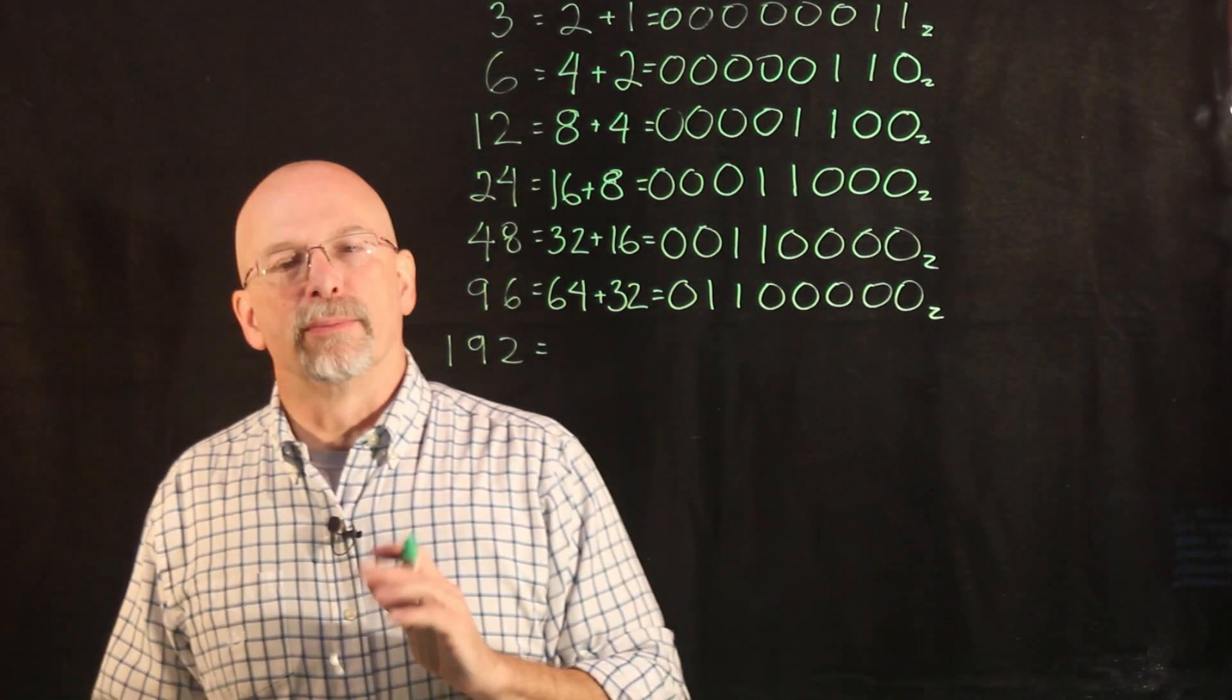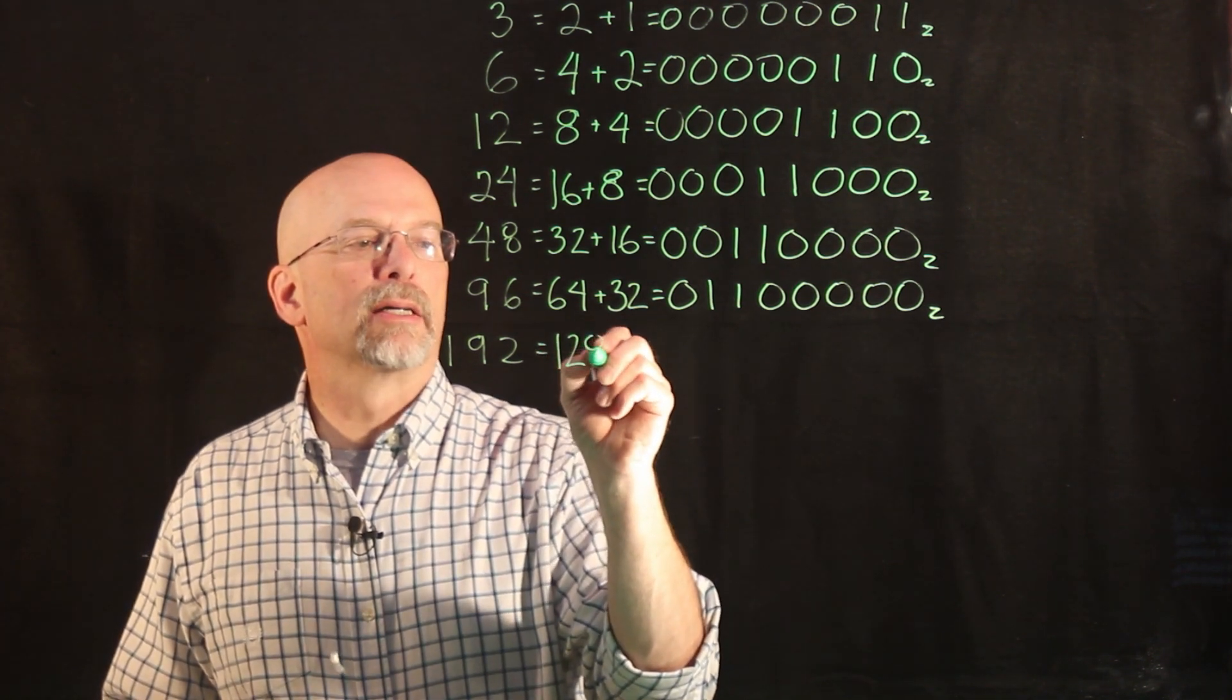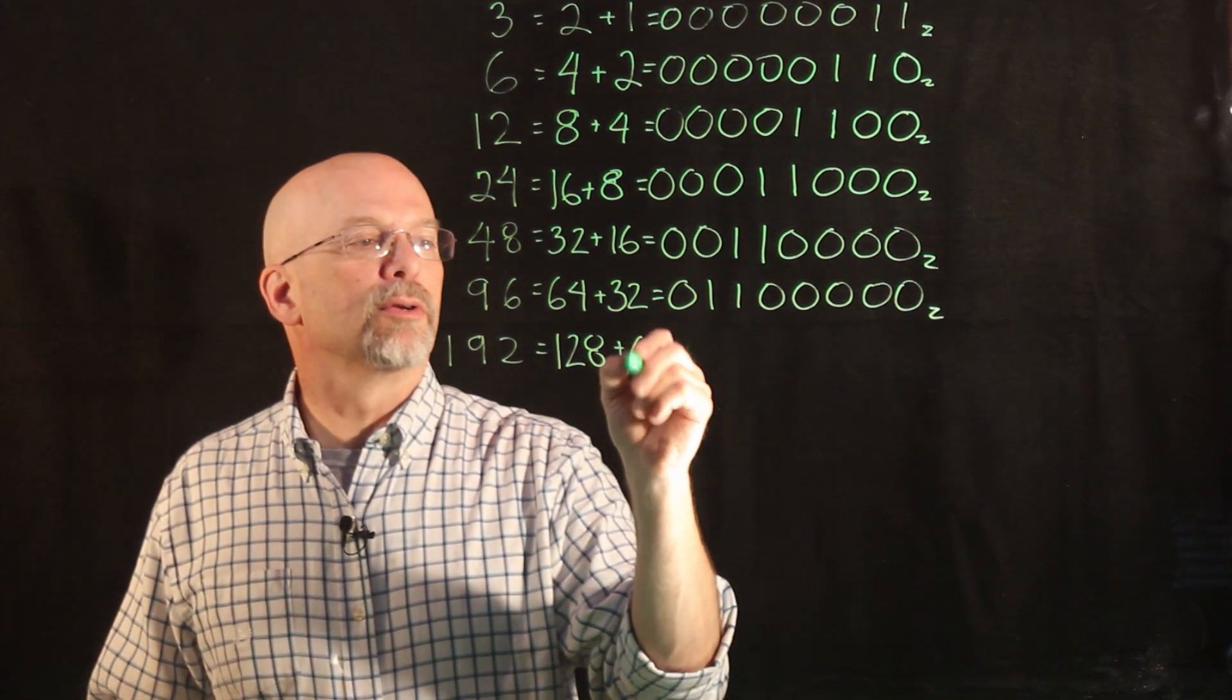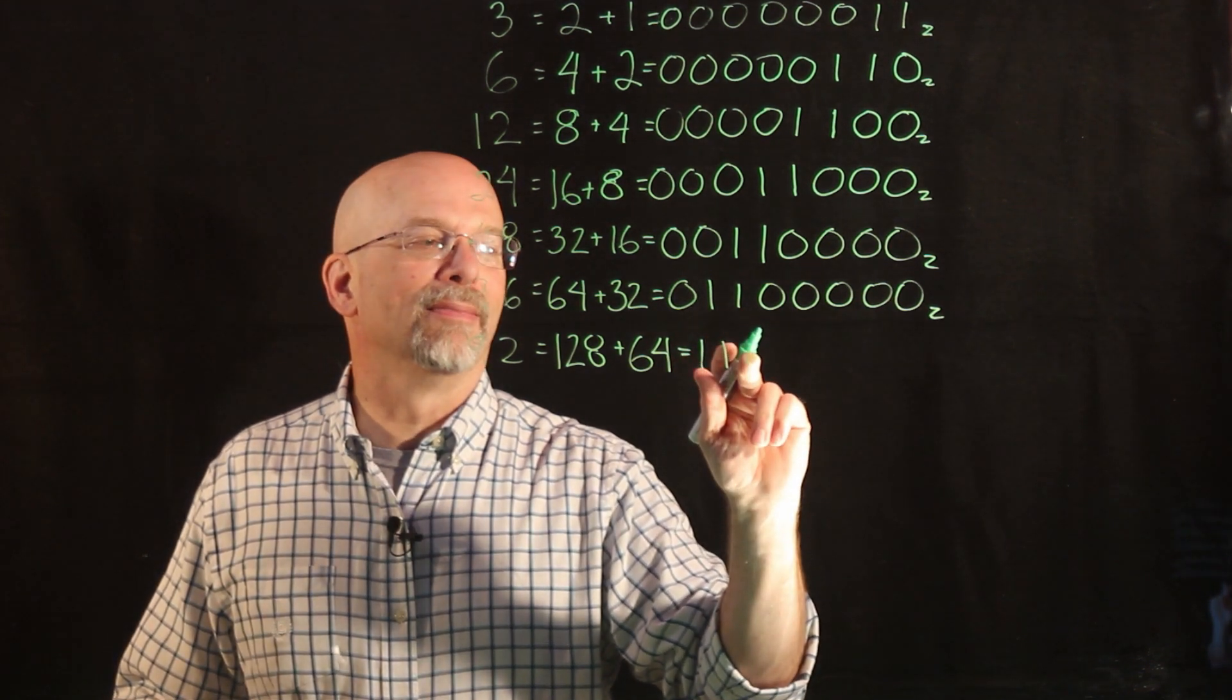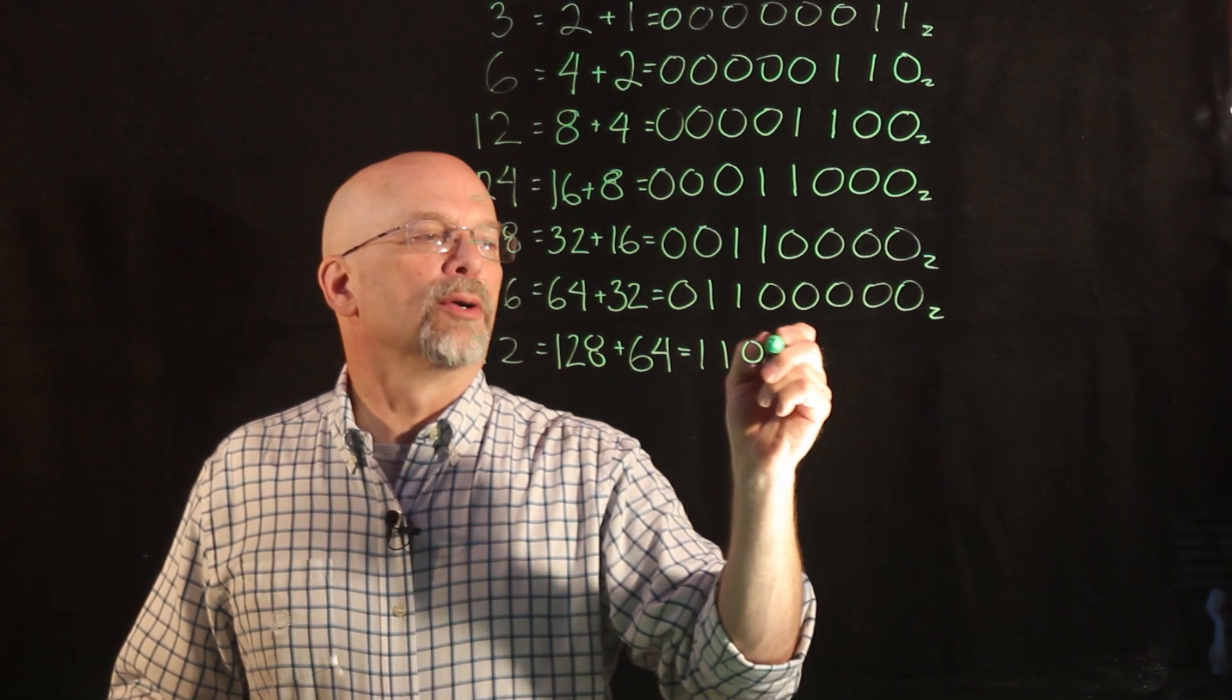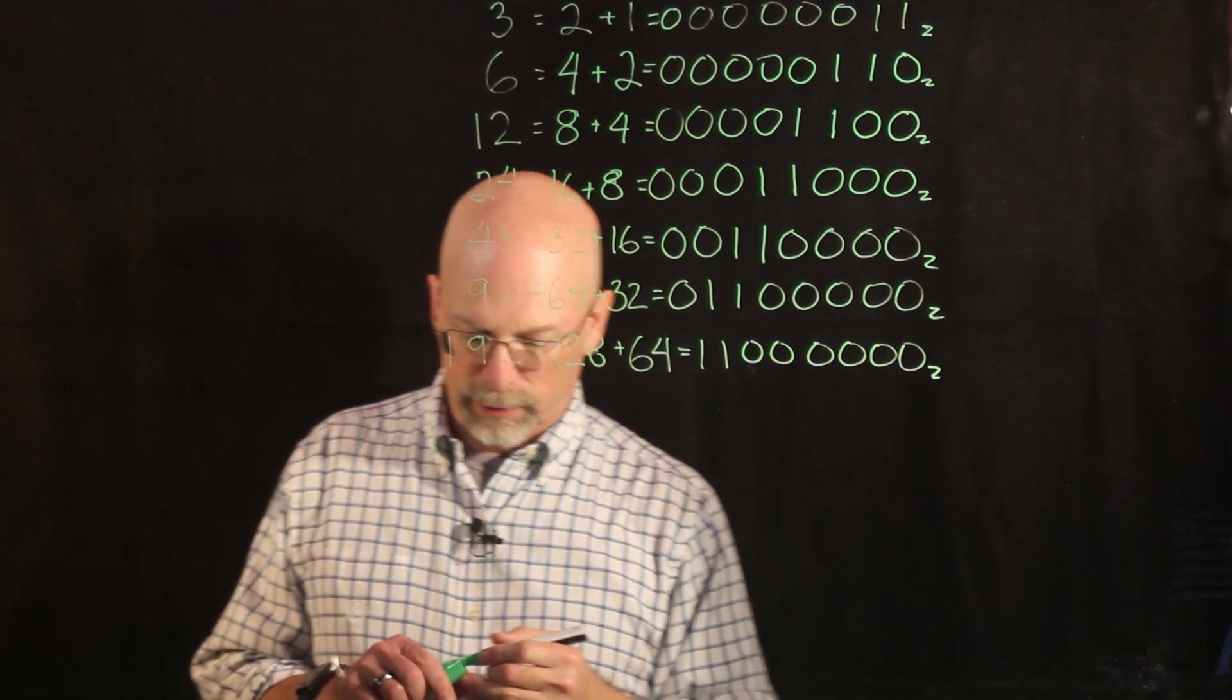And then 192. Turns out 192 is simply 128, two to the seventh, plus two to the sixth, or 64, which gives us the binary value 11000000.